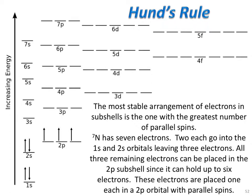Hund's rule tells us that the most stable arrangement of electrons in a subshell is the one with the greatest number of parallel spins. Nitrogen has seven electrons. We put the first two in the 1s orbital, the second two in the 2s orbital, leaving three electrons. All three remaining electrons can be placed in the 2p subshell, since it can hold up to six electrons.